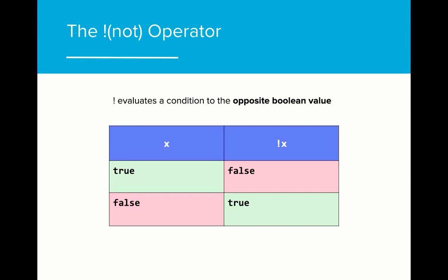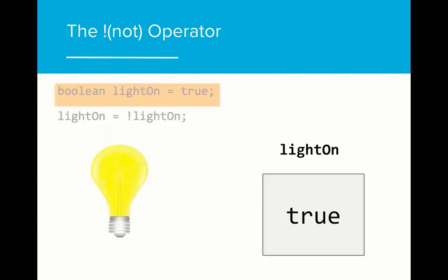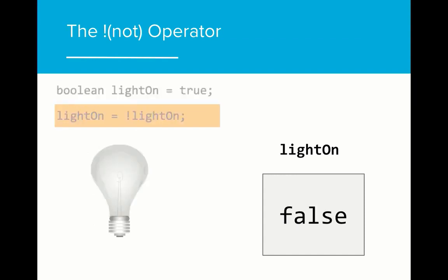The NOT operator evaluates a condition to the opposite Boolean value. In this example, if x is equal to true, not x is equal to false. We can use the NOT operator to change the value of a Boolean expression every time an action is taken. In this example, we are setting the value of light on to true. When we go to the next line of code, the value of light on has been set to not light on. Since light on was true, not light on evaluates to false and is now assigned to light on. If we were building a smart home app that needed to record when the lights in a house were on or off, this simple NOT operator would be useful to keep changing the value of light on every time the light changed status.